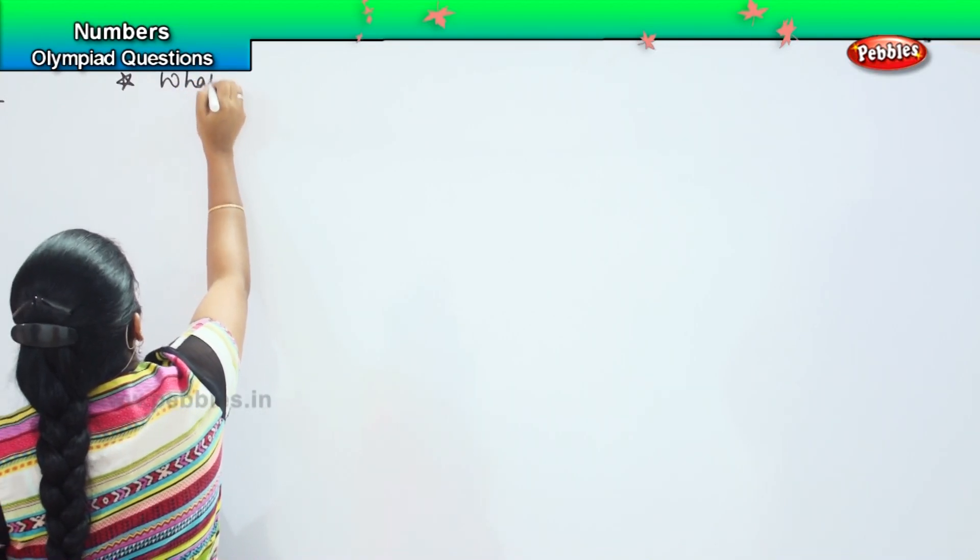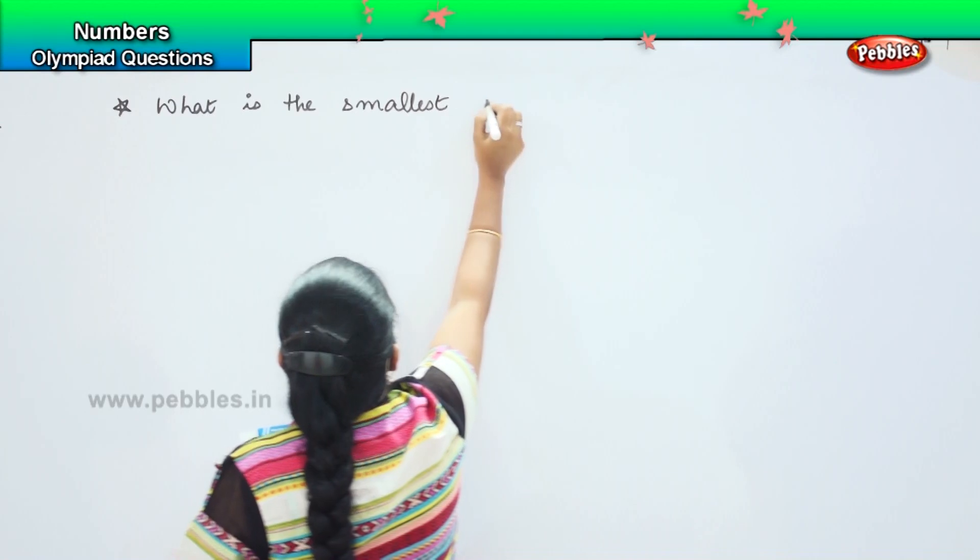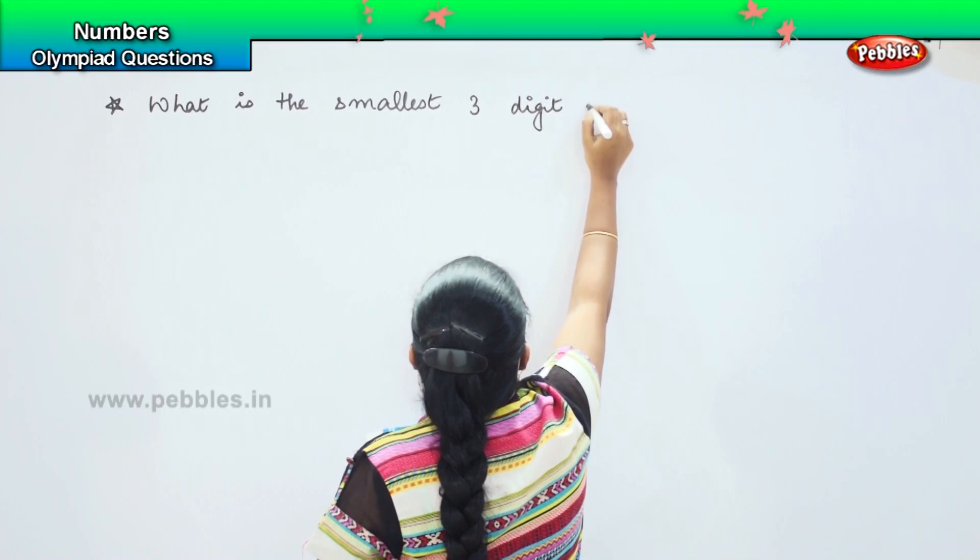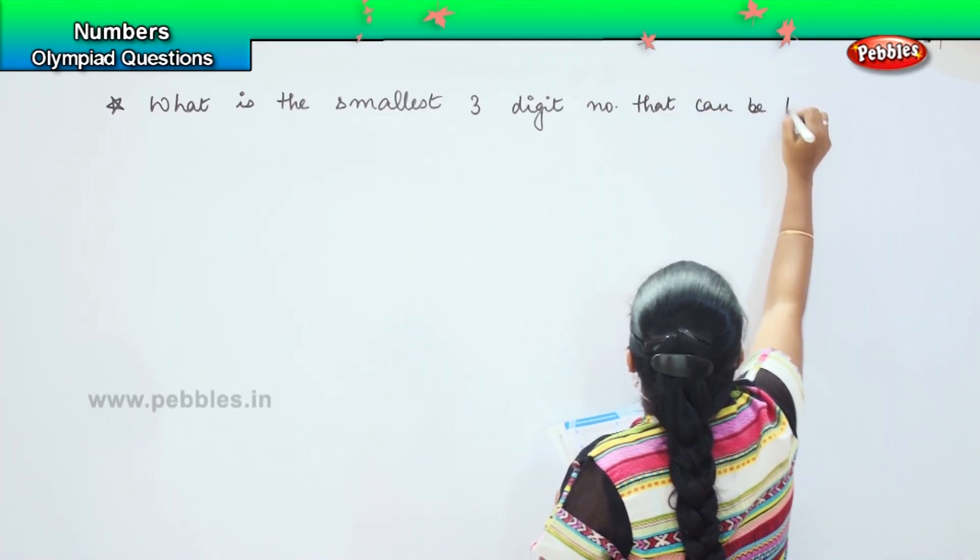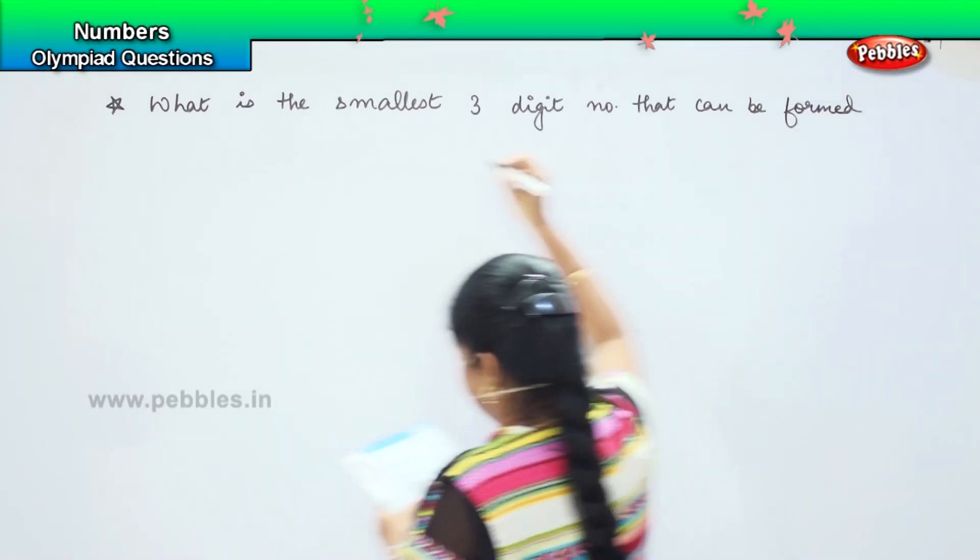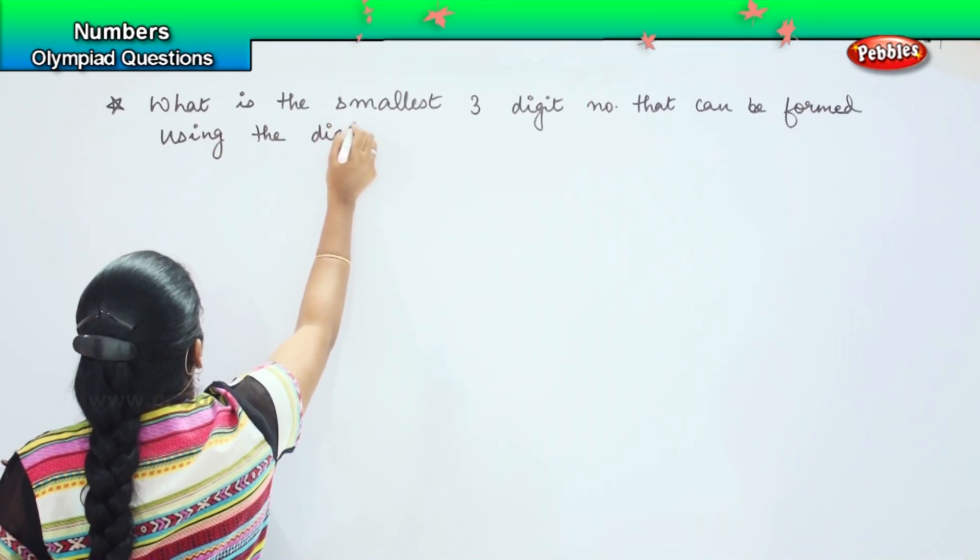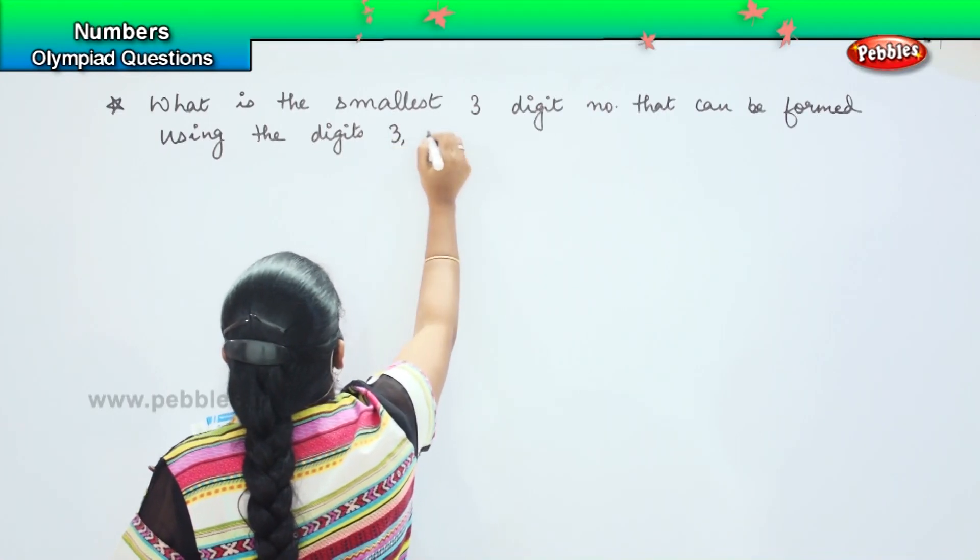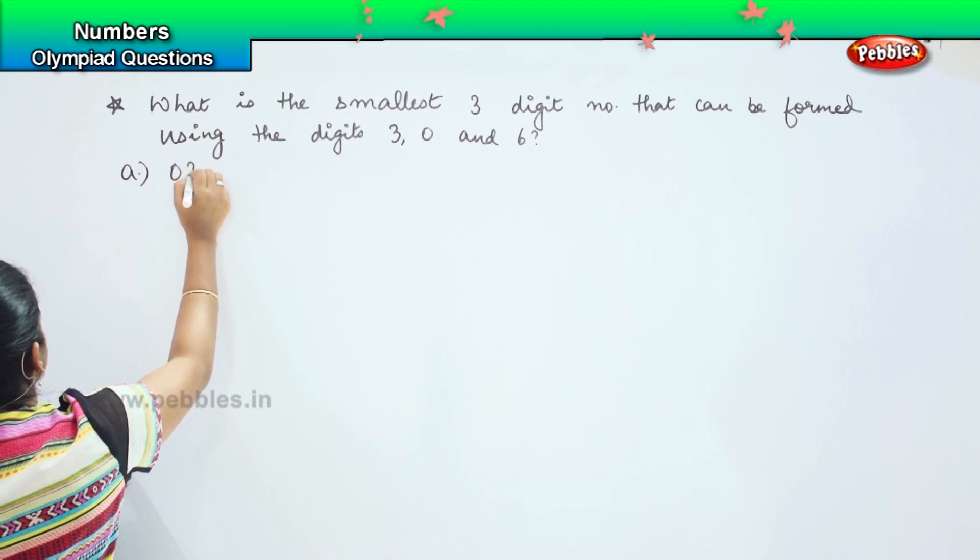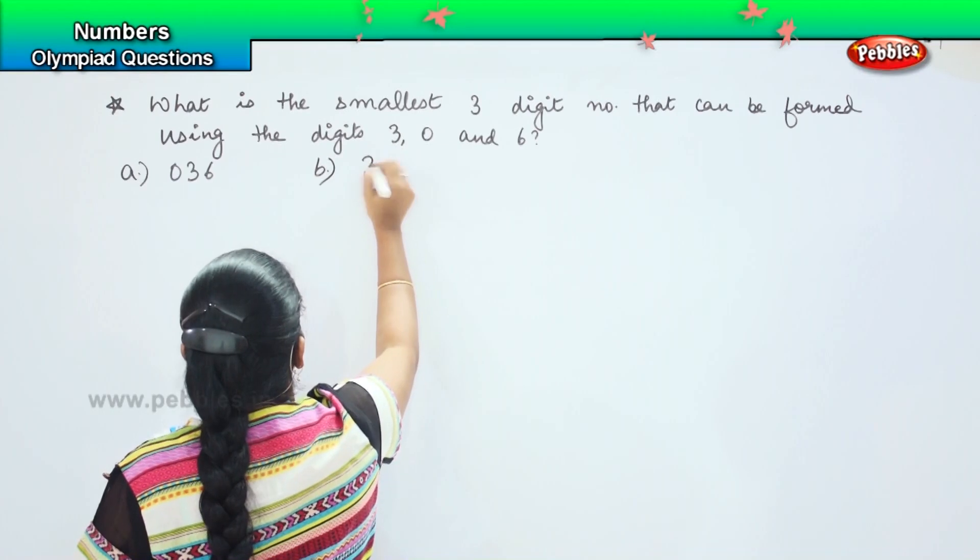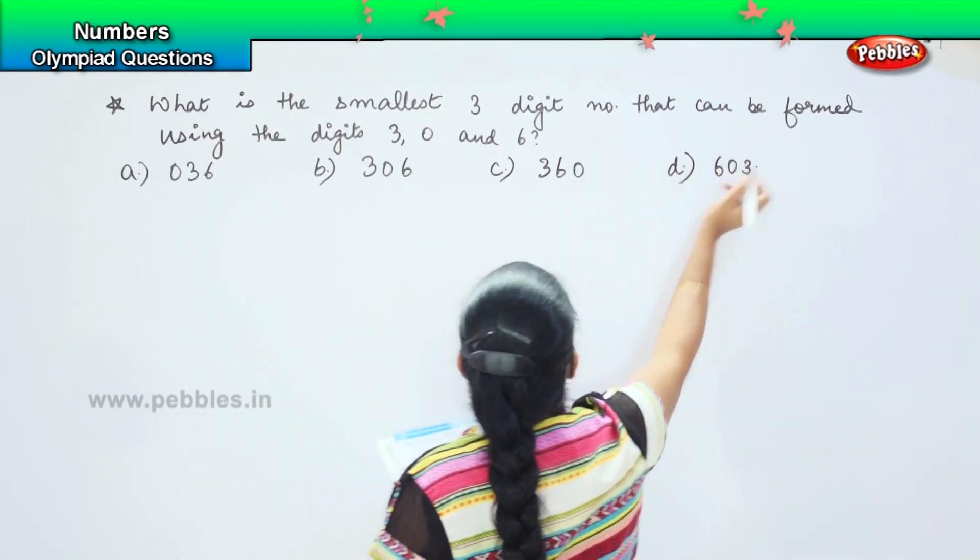What is the smallest three digit number that can be formed using the digits 3, 0 and 6? Your options are A) 036, option B) 306, option C) 360 and option D) 603.